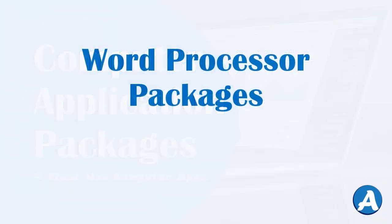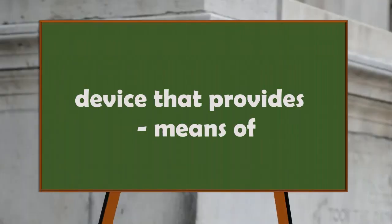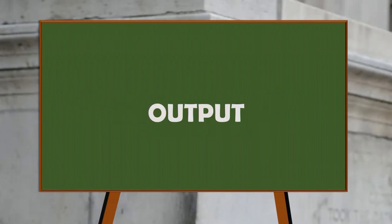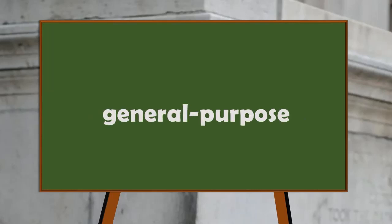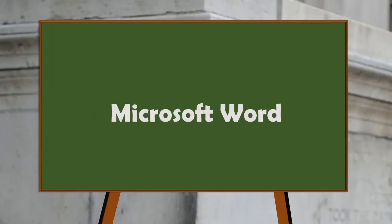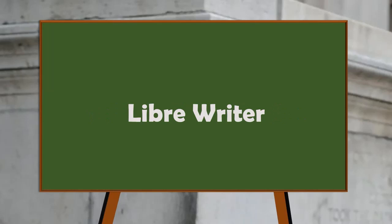A word processor is a computer program or device that provides means of input, editing, formatting, and output of text, most often with additional features. In the past, word processors were stand-alone devices, but current word processors are software programs running on general purpose computers. Examples of word processor packages are Microsoft Word, Google Docs, LibreOffice Writer, etc.